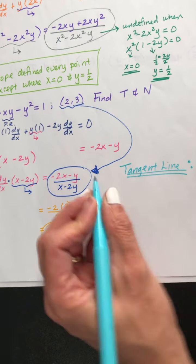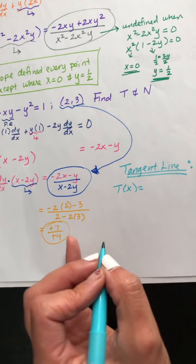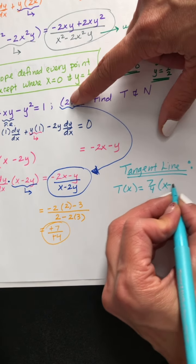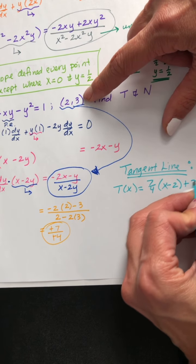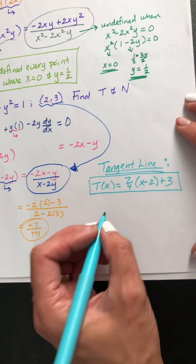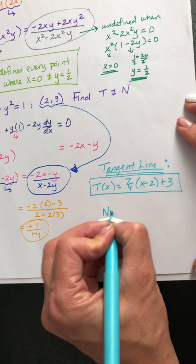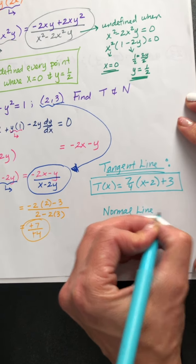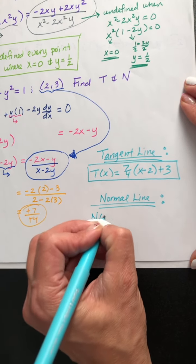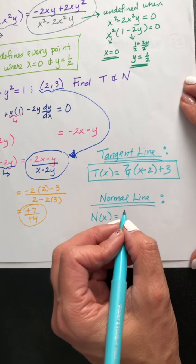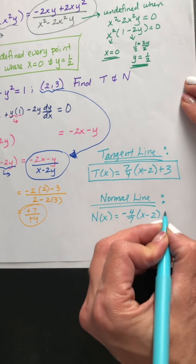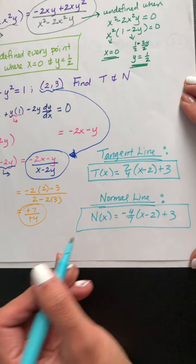Now we have enough to write the equations. The tangent line: t of x equals 7 fourths times (x minus 2) plus 3. For the normal line, we find the opposite reciprocal of 7 fourths — opposite of positive is negative, then flip it — so negative 4 sevenths. So n of x equals negative 4 sevenths times (x minus 2) plus 3.